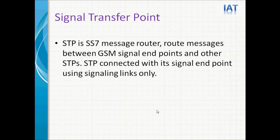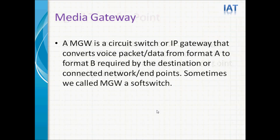Signal Transfer Point — STP is an SS7 message router. It routes messages between GSM signal endpoints and other STPs. STP is connected with its signal endpoints using signaling links only. STP does not handle any voice-related traffic or data. Media Gateway is a circuit switch or IP gateway that converts voice or packet data from format A to format B as required by the destination network or endpoints. Sometimes the Media Gateway is called a sub-switch.